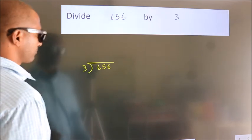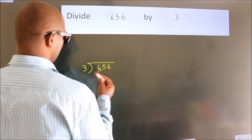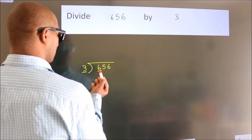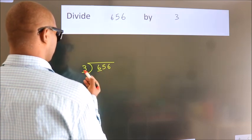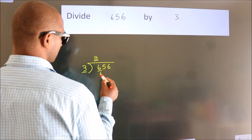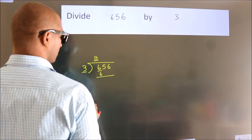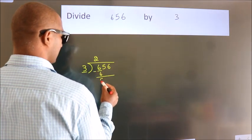Next, here we have 6, here 3. When do we get 6? In 3 table, 3 2s, 6. Now, we should subtract. We get 0.